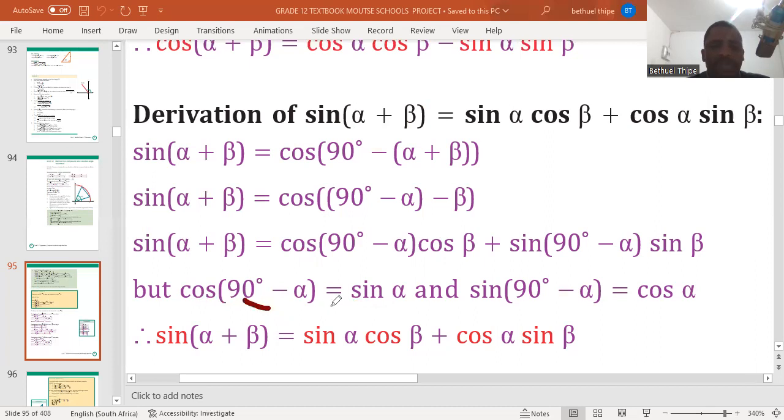We are positive here because 90 minus alpha is always in the first quadrant. Here, the co-function of sine is cos 90 minus alpha is always in the first quadrant.